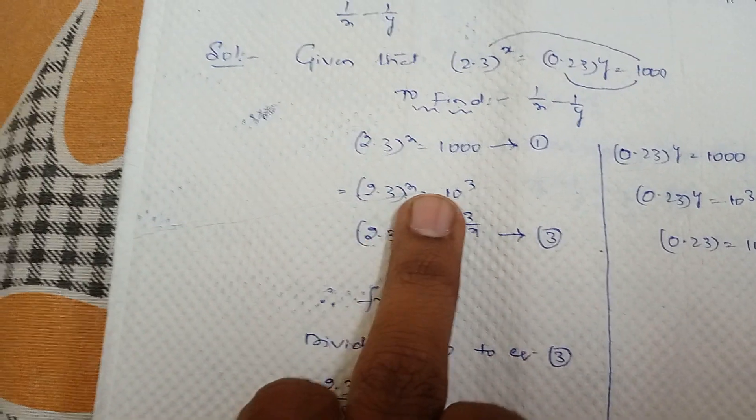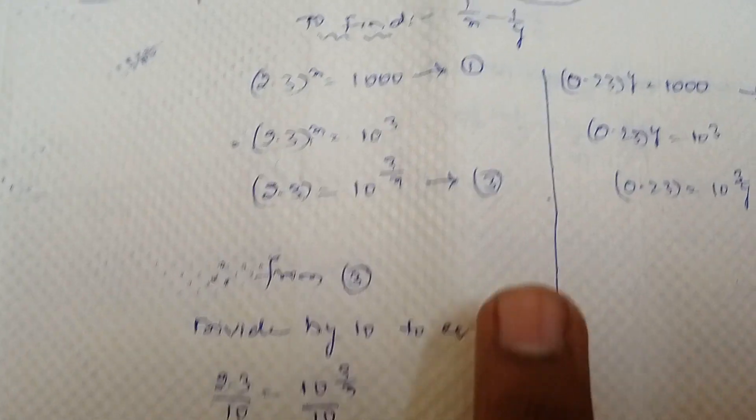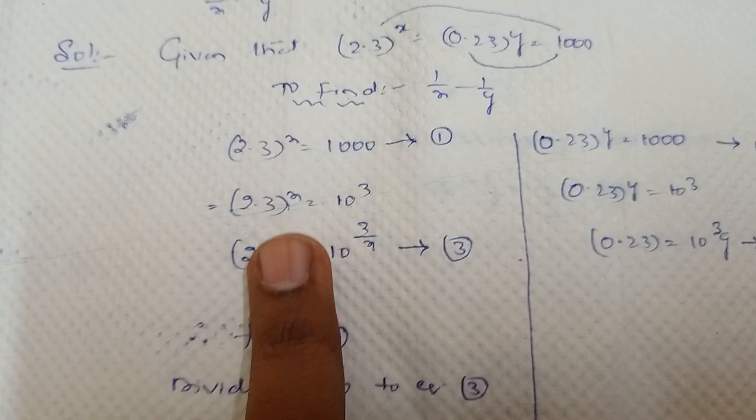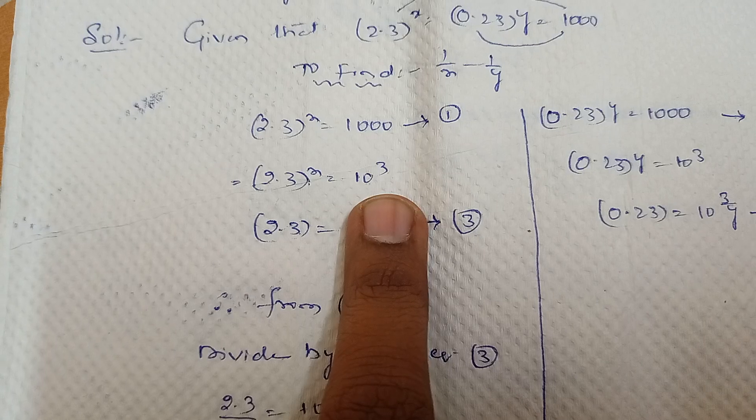So how can we write 1000 as a power cube? We can write as 10 cube, right? 10 into 10 into 10. So 2.3 whole power x equal to 10 cube.